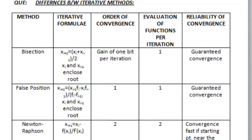We see the order of convergence for all five methods can be derived. For bisection, it is gain of one bit per iteration.